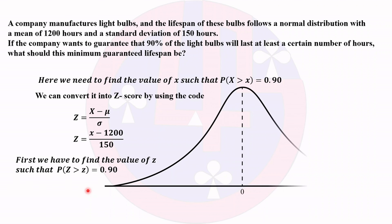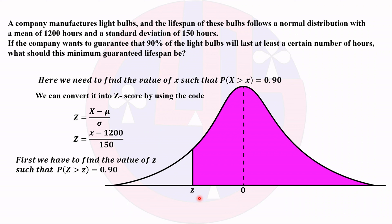Looking at the normal curve, P(Z > z) = 0.90 means the right-hand side area is 0.90, which is more than 0.50, so the Z value will be on the left side of the mean. Since the standard normal table gives less-than probabilities, we need to convert the greater-than condition. We can use the symmetric property of the normal curve to do this.